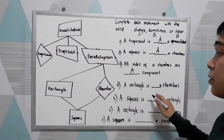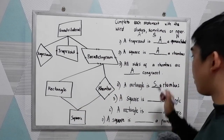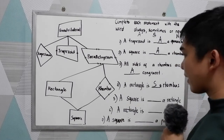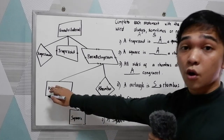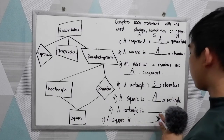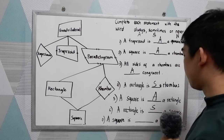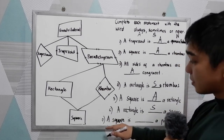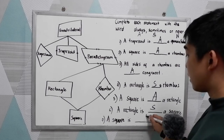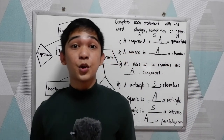A rectangle is sometimes a rhombus. A square is always a rectangle. A rectangle is sometimes a square. And lastly, a square is always a parallelogram. Thank you for watching, Senior Pablo TV.